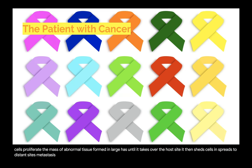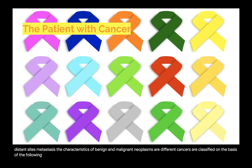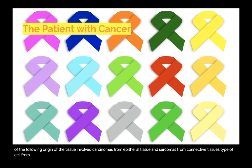The characteristics of benign and malignant neoplasms are different. Cancers are classified on the basis of the origin of the tissue involved — carcinomas from epithelial tissue and sarcomas from connective tissues — and the type of cell from which they arise, namely epithelial or connective tissue cells.